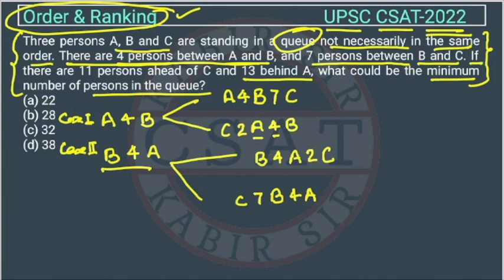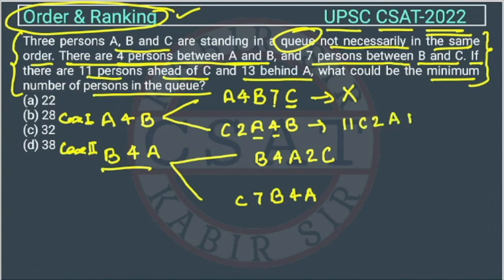Next condition: 11 persons ahead of C. Checking the cases, in some arrangements the count of persons ahead of C becomes 12 or 13, which contradicts the condition of only 11 ahead. So those cases are not possible. In the valid case, we get: 11, C, 2, A, 4, B. And there are 13 persons behind A.